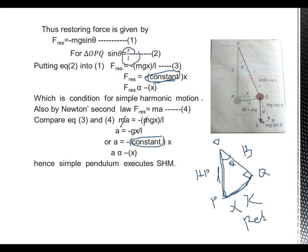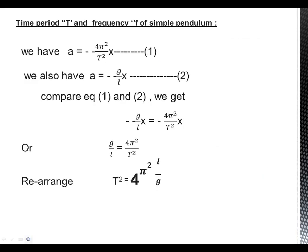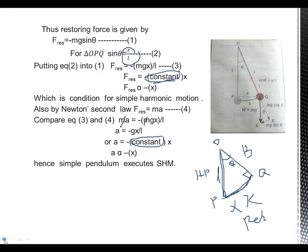Now we need to determine the time period and frequency. We will use this result directly: acceleration = −(4π²/T²) × x. This is beyond the scope of your current book, but take it directly for now — in first year you will study it in detail. We have already proved that acceleration = −gx/L.